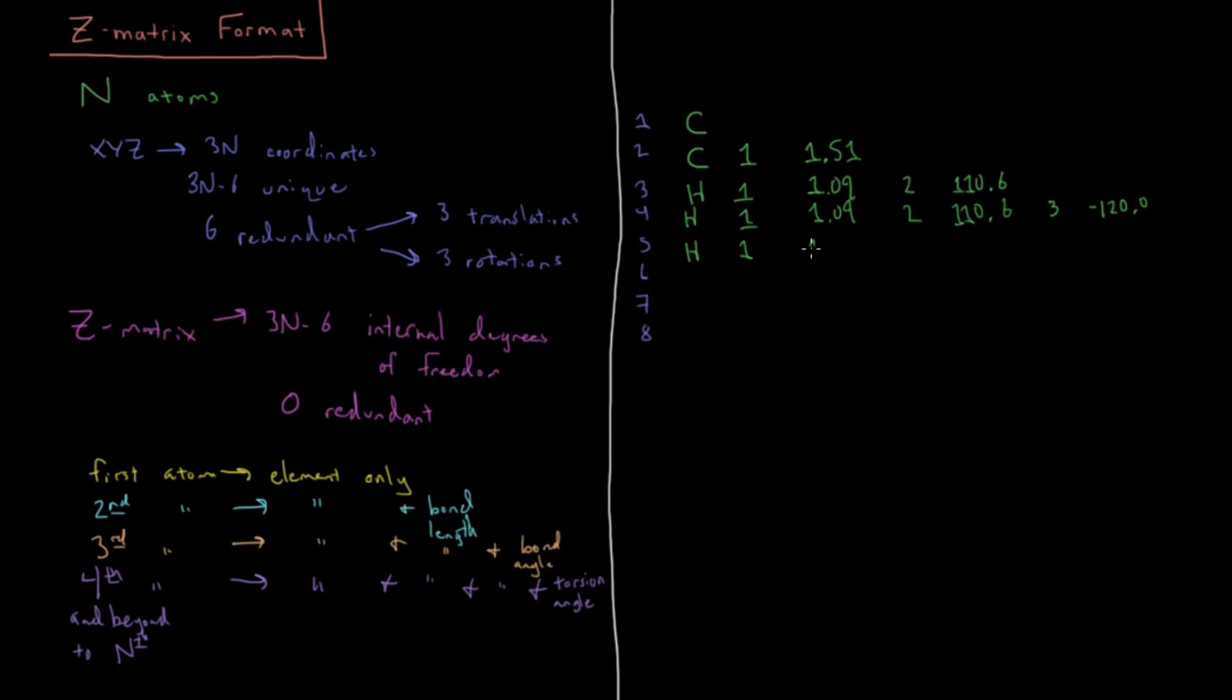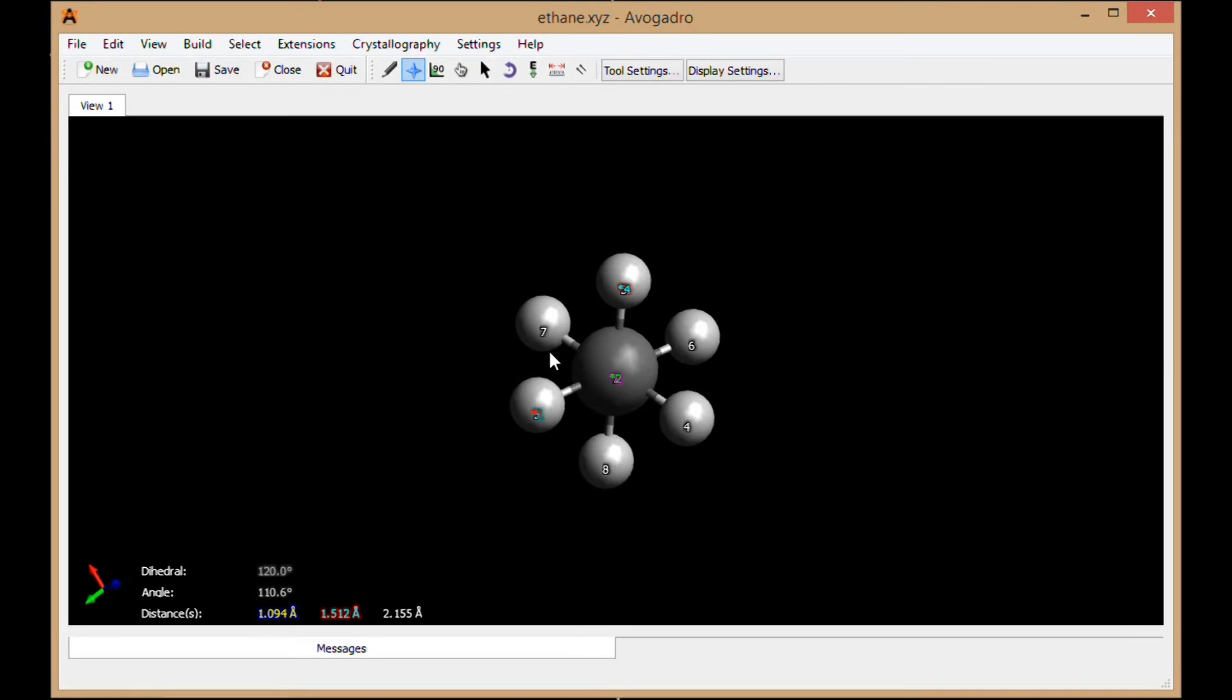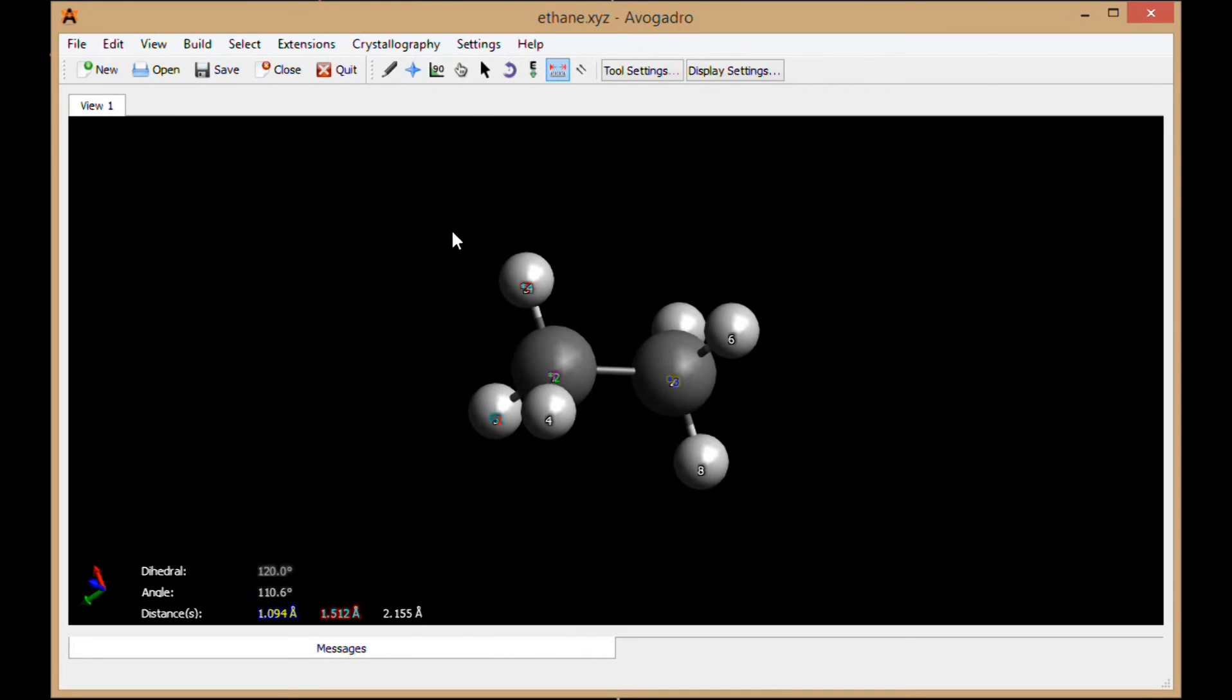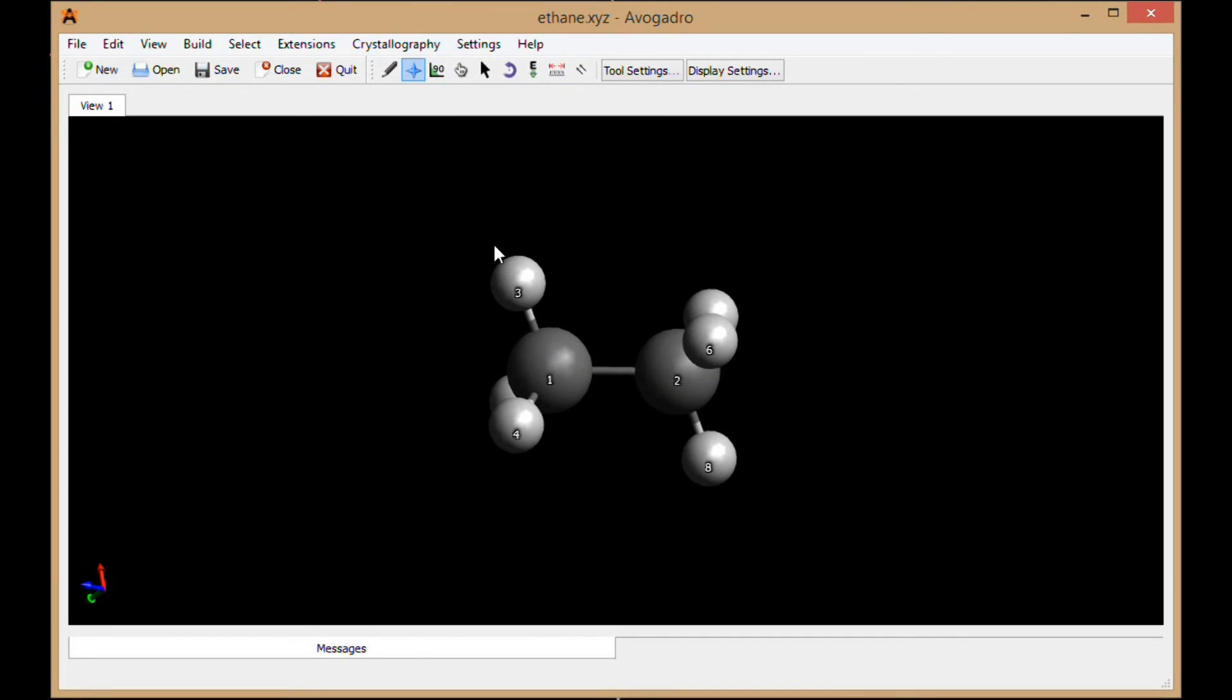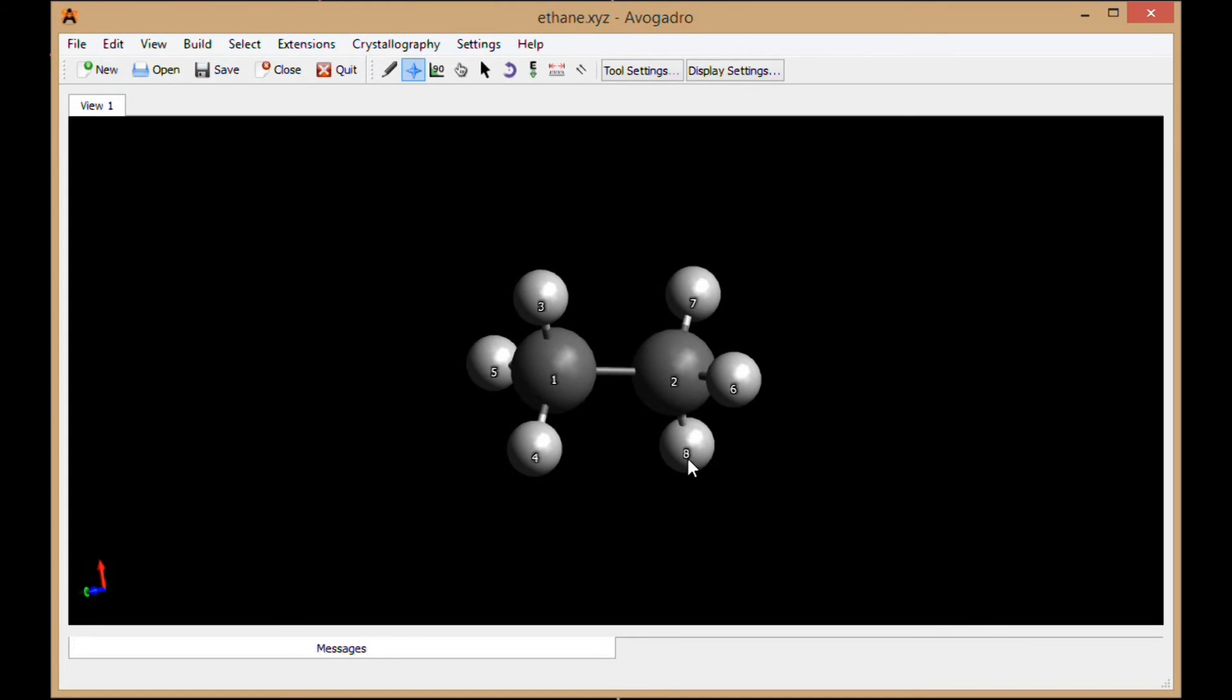So we have H, 1, 1.09, all those CH bond distances are the same. All of the HCC bond angles are the same. And the three, positive 120. Then I can do the same things for atoms six, seven, and eight. I don't necessarily have to define them all relative to any of these individual atoms here, but I can pick any atoms that have already been defined, but sometimes it's just more convenient to pick one in particular.